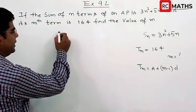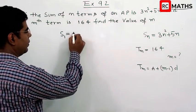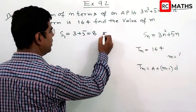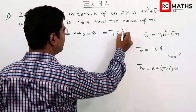We will take S1. S1 is 3 plus 5 which is 8. S1 is T1, or a equals 8.